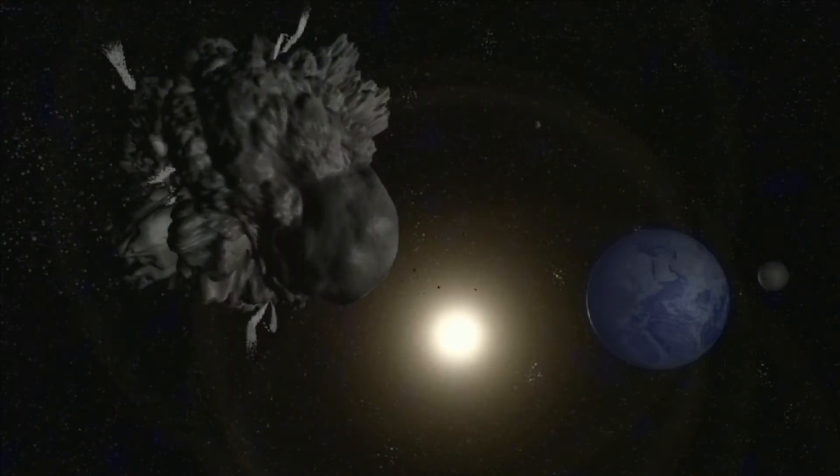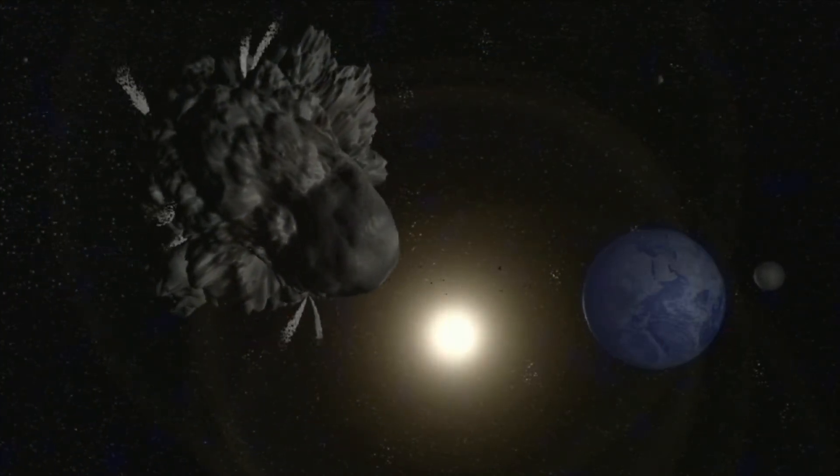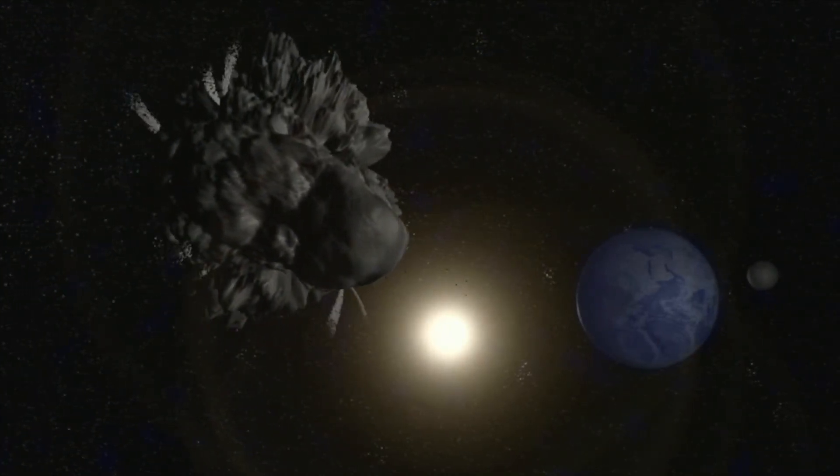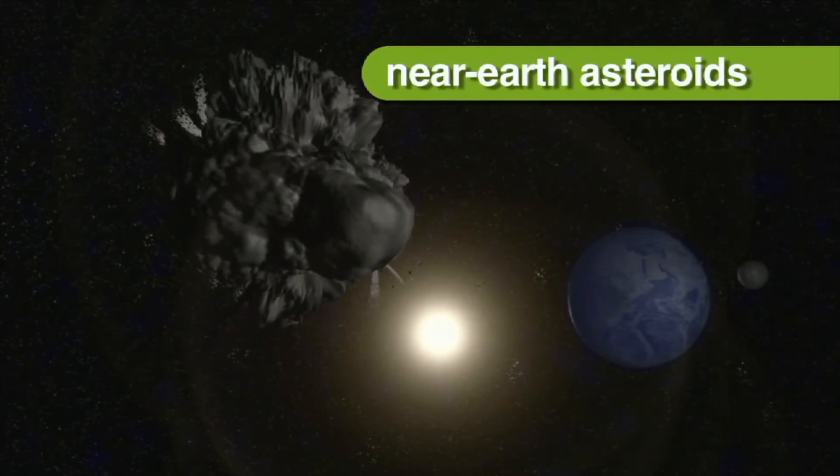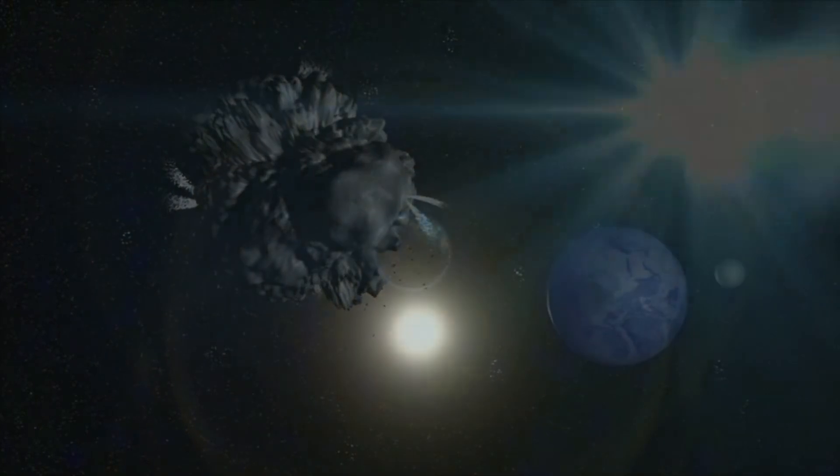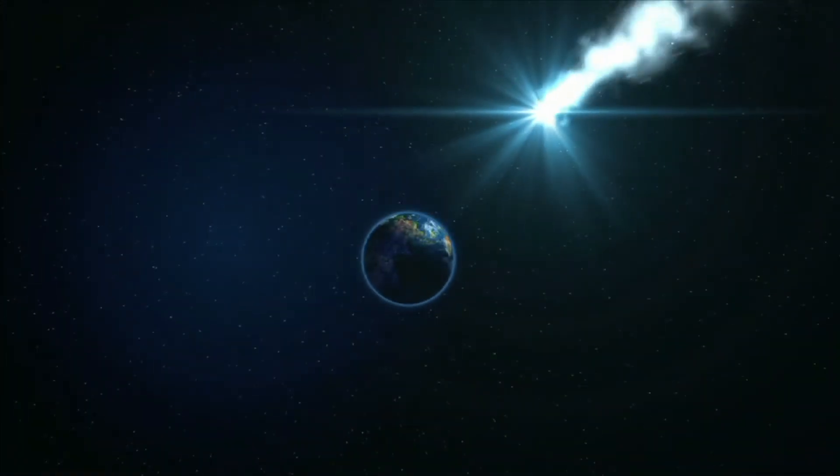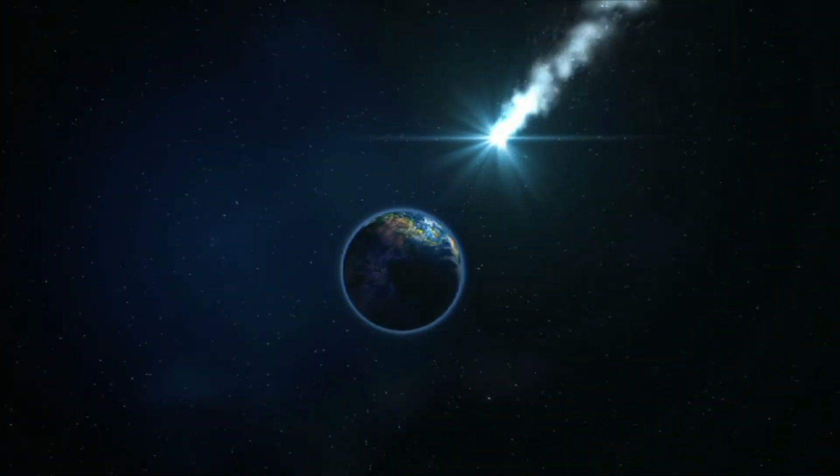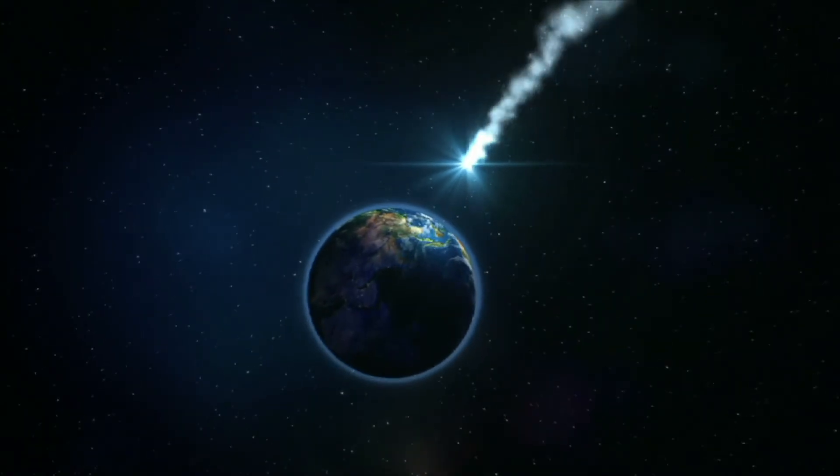There are some asteroids that occupy an orbit that crosses with our own. These are called near-Earth asteroids. Scientists think that one of these near-Earth asteroids collided with Earth and led to the extinction of the dinosaurs.